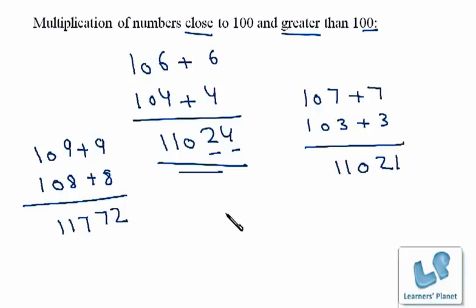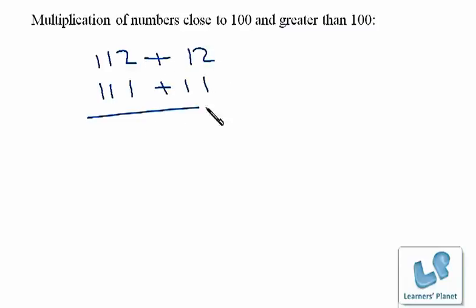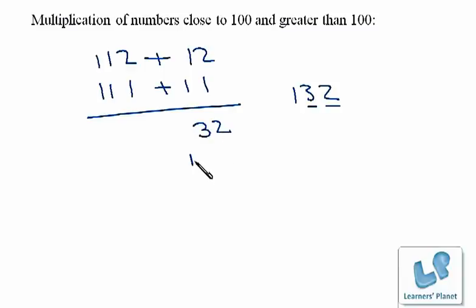Now, what if the multiplication of the two surplus numbers gives a three-digit number? Let us see what we'll do in such a case. We'll take 112 and 111. This is plus 12 and this is plus 11. We multiply these two numbers and get 132, but we can only fill two places, so we write 32 here and carry the 1 forward. Now we add the cross numbers: 112 plus 11 is 123.